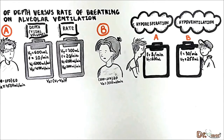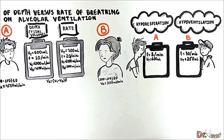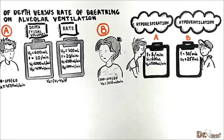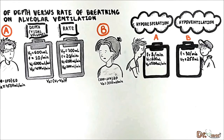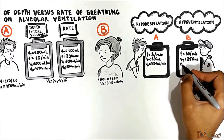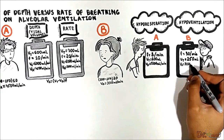Despite a decreased respiratory rate, the tidal volume of Patient A is large. If you calculate his alveolar ventilation, it will be 5,200 mL per minute. He is considered to have hyporespiration because his respiratory rate is less than 10 per minute; however, his alveolar ventilation is normal. The opposite is true for Patient B — his alveolar ventilation will be 3,000 mL per minute.